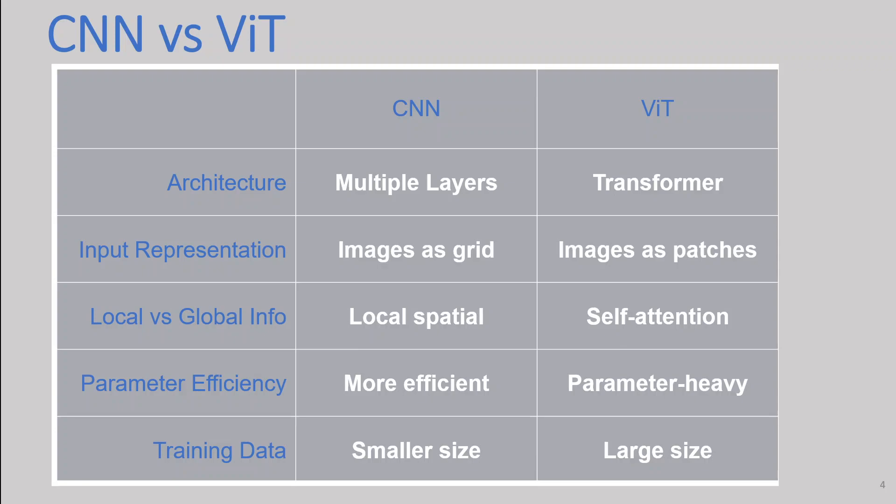CNN stands for Convolutional Neural Network and ViT stands for Vision Transformer. Both CNN and ViT are popular architectures used in computer vision tasks, but they have distinct differences in terms of their design and operation. In this video, I'm going to explain the difference between CNN and ViT in as simple language as possible, and also why sometimes using ViT instead of CNN is preferred.